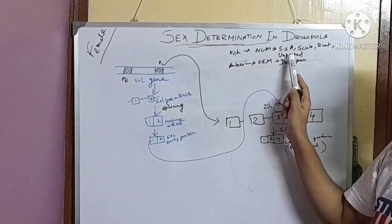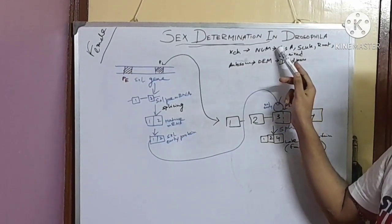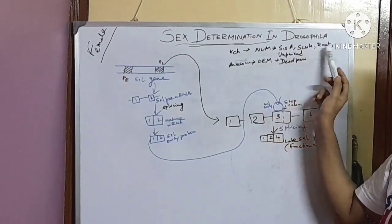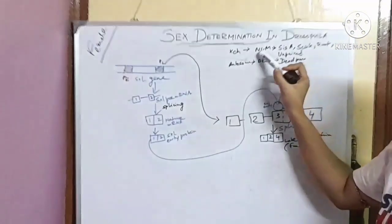This unpaired protein through JAK-STAT pathway reinforces their concentration. Scute and runt's concentration together are called numerator elements.